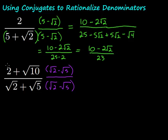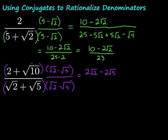In this one, we're going to have to FOIL on both the top and the bottom of our fraction. On the top: we have 2 times square root of 2, which is 2 square root of 2. Then 2 times negative square root of 5, which is minus 2 square root of 5. Then square root of 10 times square root of 2 — we multiply inside and put it all under the radical — giving us plus square root of 20. Finally, square root of 10 times negative square root of 5 gives us minus square root of 50.